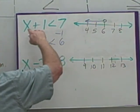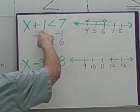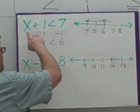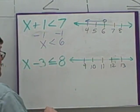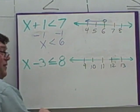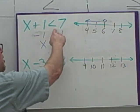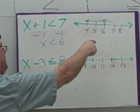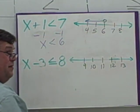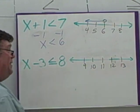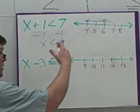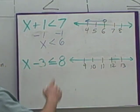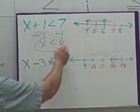Does it work with the original? Four plus one — is that less than seven? Five is less than seven. That works. Five plus one is less than seven, yes. Six plus one equals seven, and we don't want to include it. Seven plus one is eight — is that less than seven? No, so we don't want to include seven. It all works out. We've got the right graph and the right answer. This is our solution.